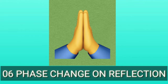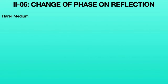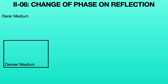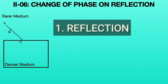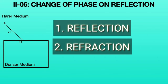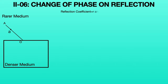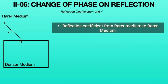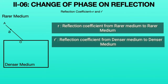Things will be changed from this topic. Consider two mediums: rarer medium and denser medium, as shown in the left side animation. Consider a light ray coming from A incident on the boundary between rarer medium and denser medium at point O. The intensity of this light ray AO is A. We define reflection coefficients r and r dash, where small r represents the reflection coefficient in the rarer medium and small r dash represents the reflection coefficient in the denser medium. Similarly, the transmission coefficients are T and T dash.